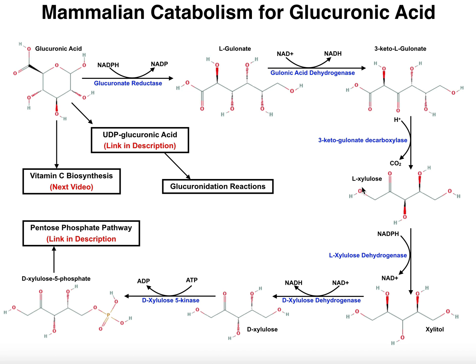This conversion is going to be catalyzed by two successive enzymes. The first one is L-xylulose dehydrogenase. This carbonyl, which is now at position 2, is going to be reduced by this dehydrogenase using electrons from NADPH. That's going to generate a molecule called xylitol. You may have seen xylitol before — it's actually an artificial sweetener that you can buy in drug stores. It's actually more natural than things like aspartame, considering that this is a normal intermediate in glucuronic acid catabolism.